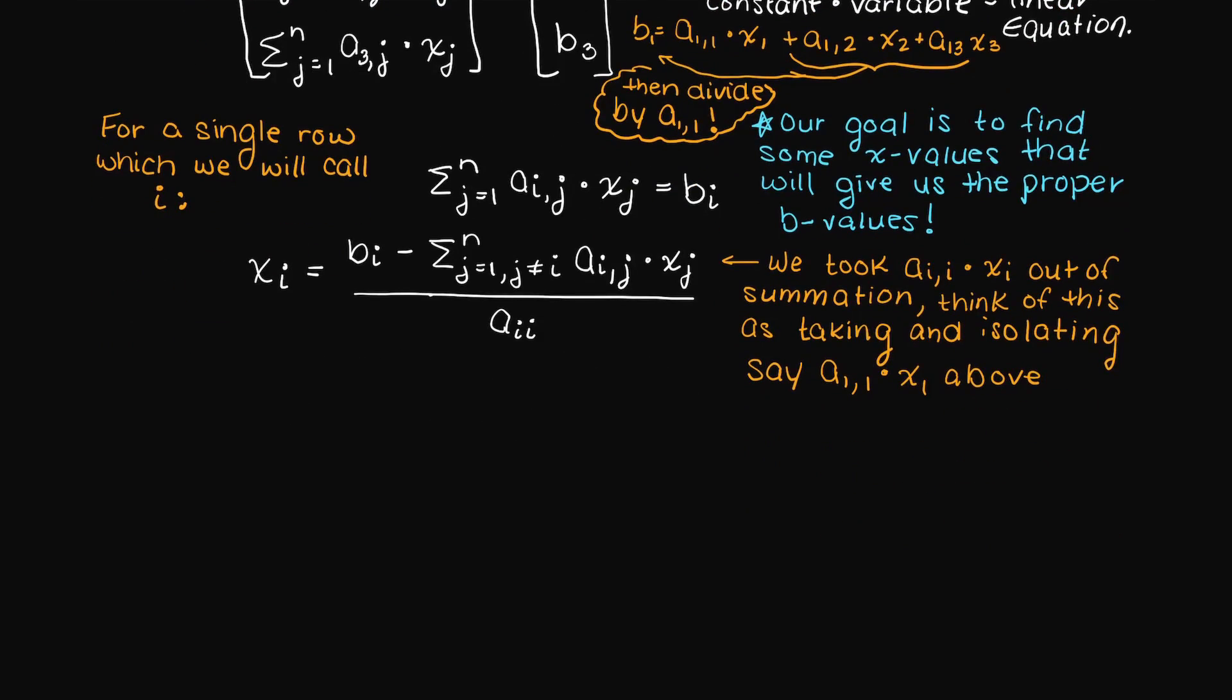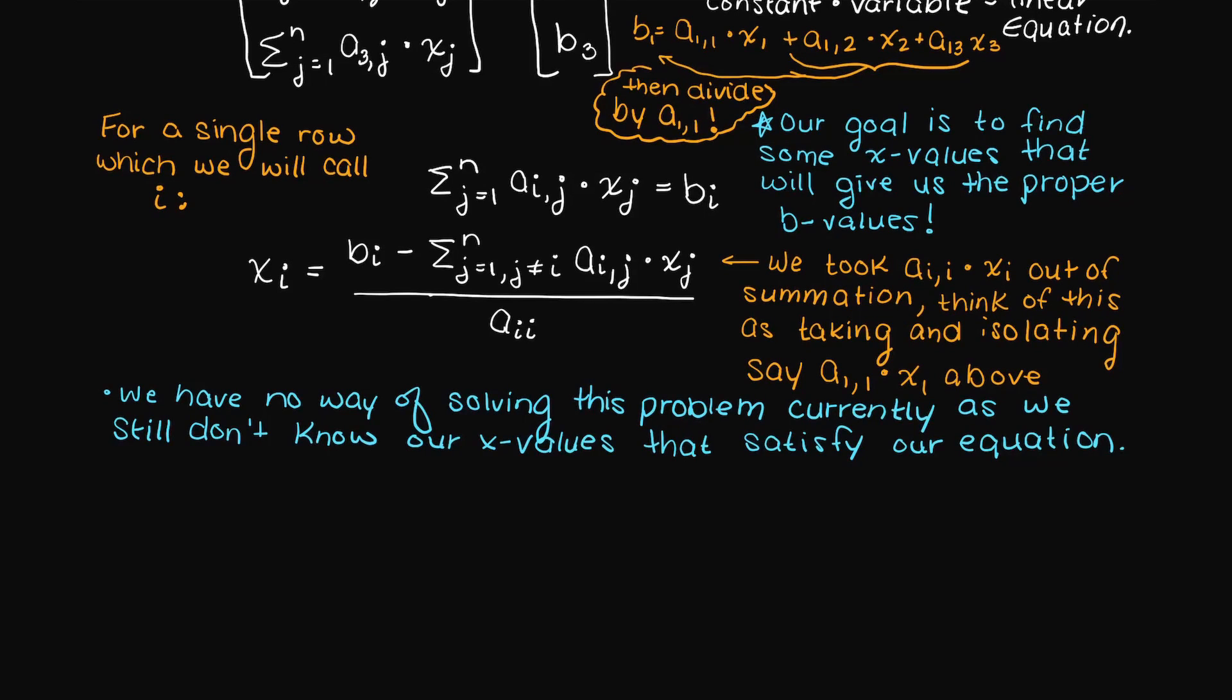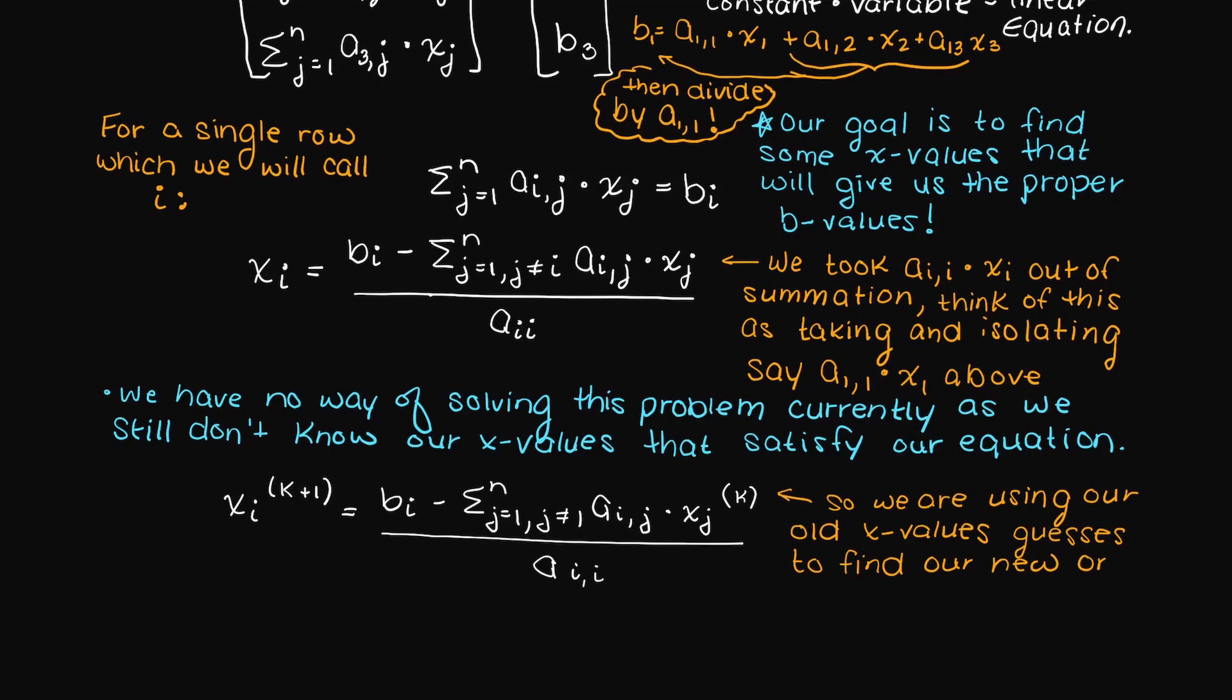Well, what now, you may ask? Well, since we have no way of currently solving this problem, since all of our x values are still unknowns, maybe we can just guess an answer and hope for the best. So let's say k will track our iterations, or alternatively stated, how many guesses we have currently made.